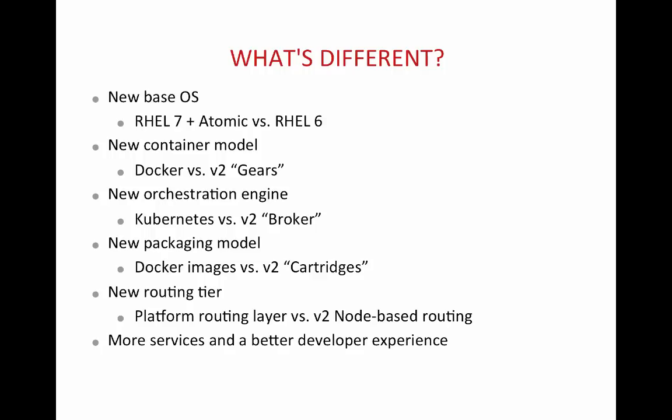Gears were using the same technologies as what Docker uses today. In Gears, they are still Linux containers and they were using SELinux and Linux control groups — the technologies are the same. However, the packaging format in Docker is different, and since that is kind of standardized across the industry these days, we are moving towards a Docker-based model. The new orchestration engine, instead of the OpenShift broker in version 2, is going to be replaced by Kubernetes — specifically, Kubernetes master will take the place of broker. The new packaging model for technologies would be Docker images in place of OpenShift cartridges from version 2.